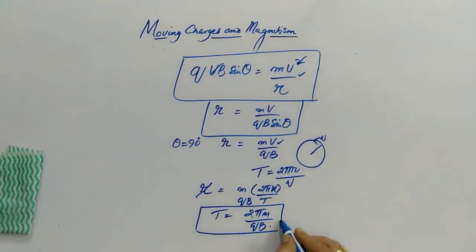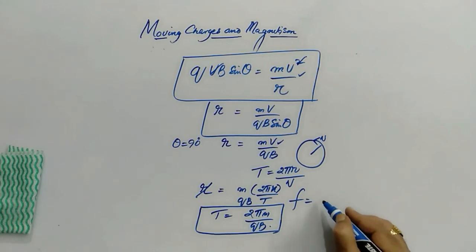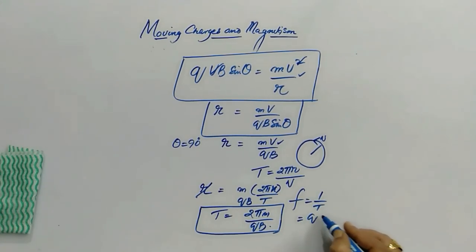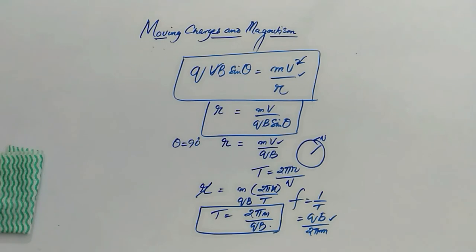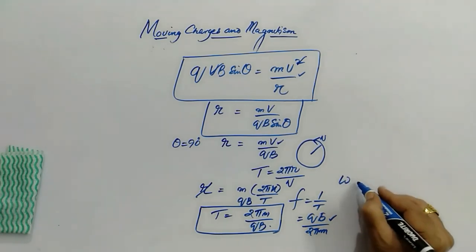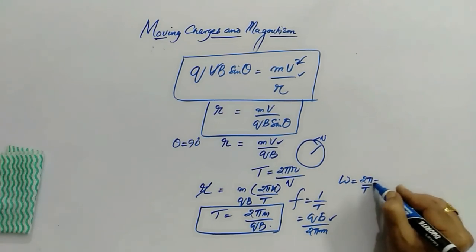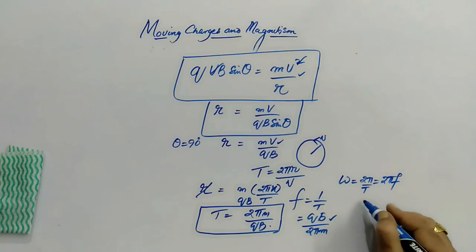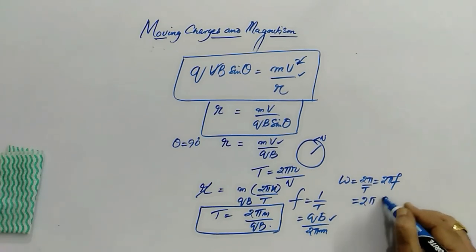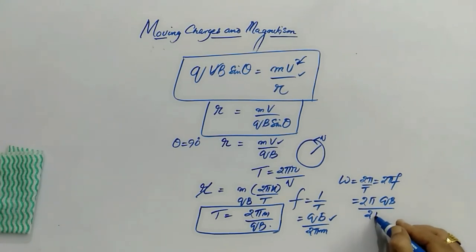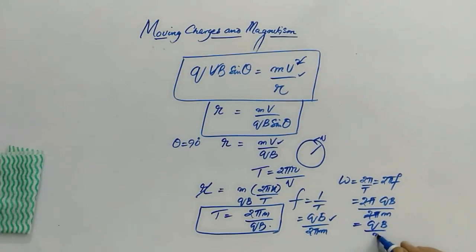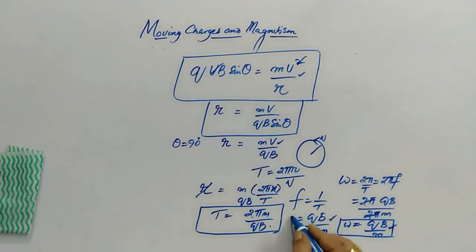Knowing the time period, the frequency is its reciprocal: f = qB / (2πm). The angular frequency is ω = 2πf = 2π × qB / (2πm), and after cancellation, ω = qB / m.